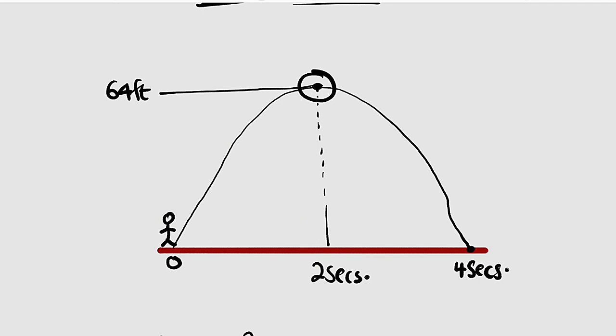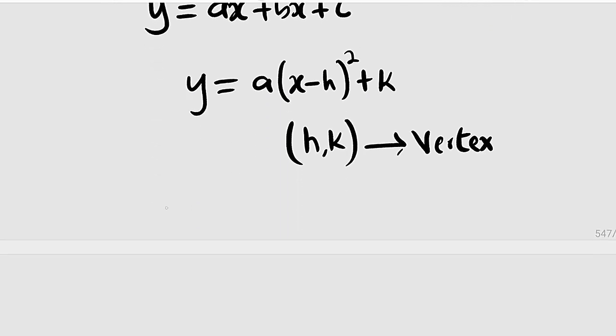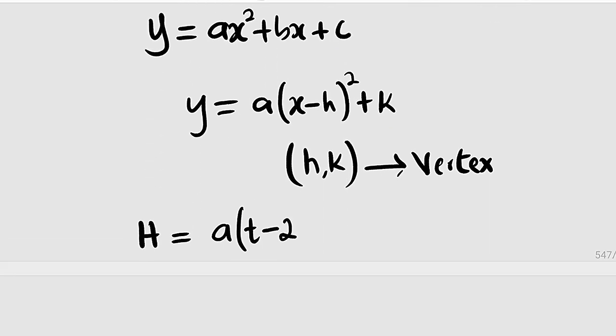But we are going to write the function in terms of height and time. So h instead of y, which is the height, is now equal to a in the parenthesis. We have t instead of x minus h, which is 2 seconds. We write 2 here. We square all, then we add the maximum height, which is 64.